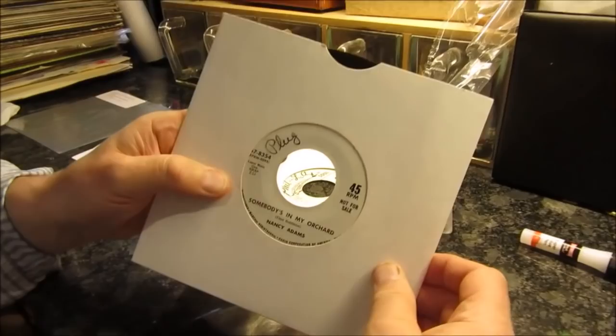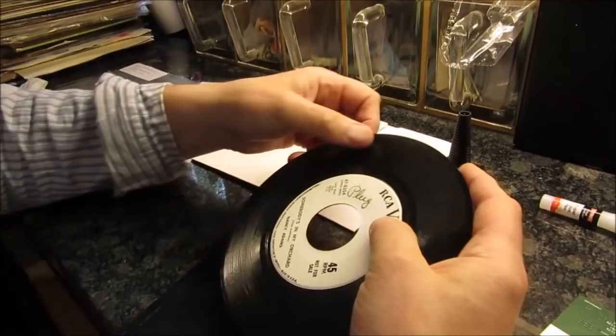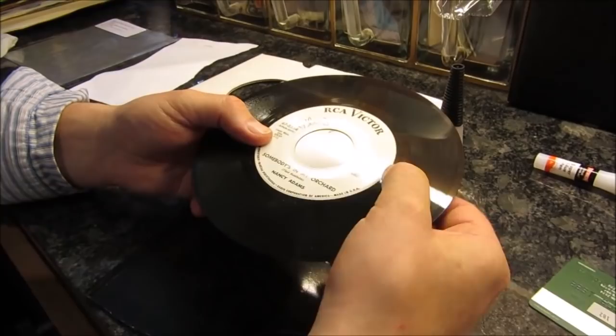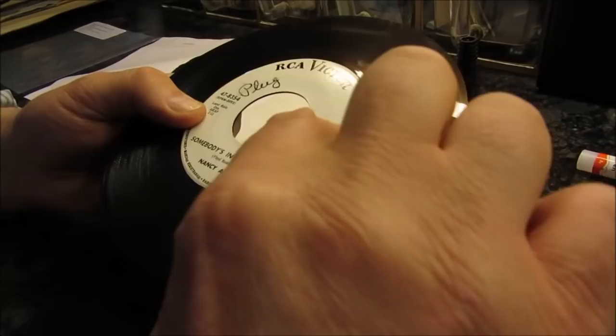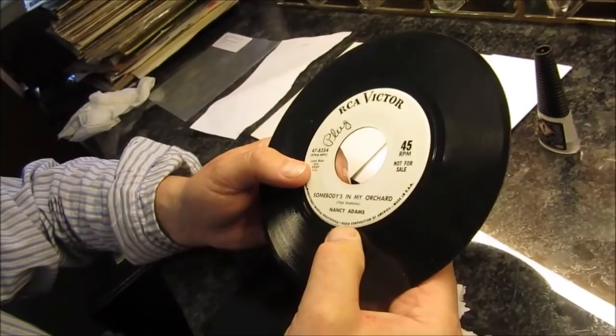Right, the first one I'm going to do today, and currently one of my favorite records, is Somebody's In My Orchard by Nancy Adams, which is causing a bit of a sensation. It's a very jazzy, popcorny type thing. The problem with this one is it's got what they call a ring crack. It's come from the edge of the vinyl here, goes round the label, and comes out here.